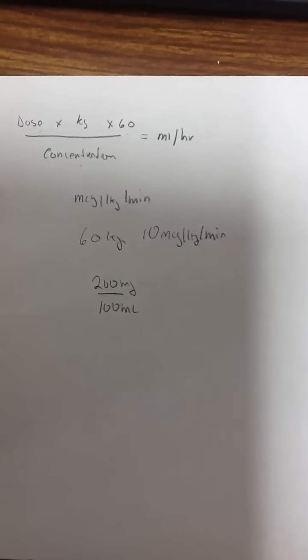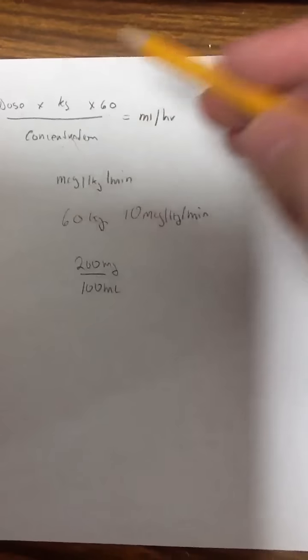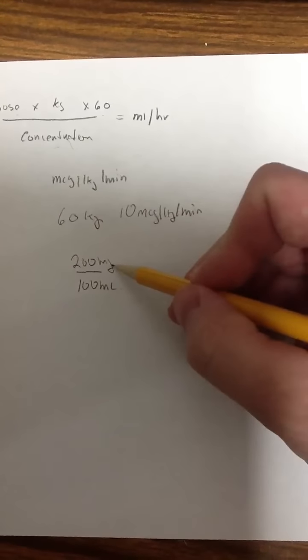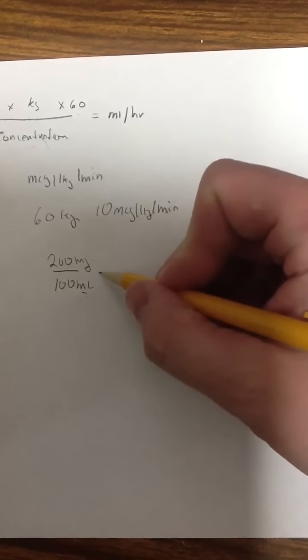The first thing that I want to do is calculate my concentration. So I've mixed 200 milligrams of dopamine in 100 milliliters of, let's say, normal saline. No big issue there.